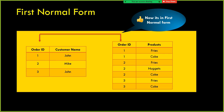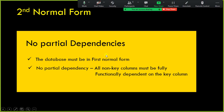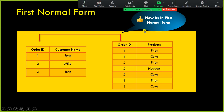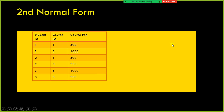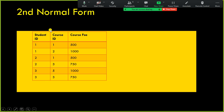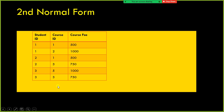The next one is second normal form. What the second normal form says is: if the table or database has to be in second normal form, first of all it should comply with first normal form. In addition, all the non-key columns should be fully functionally dependent on the key column. Let us take another data set. In this data set, student ID and course ID are there, and I have a course fee column.